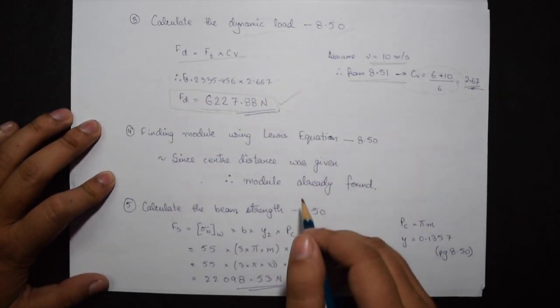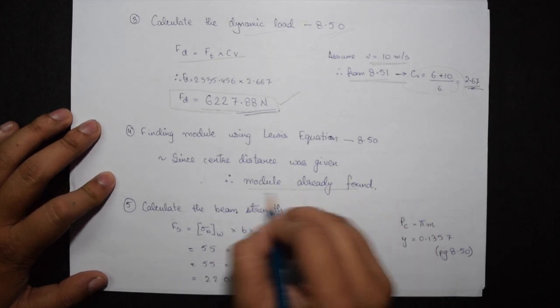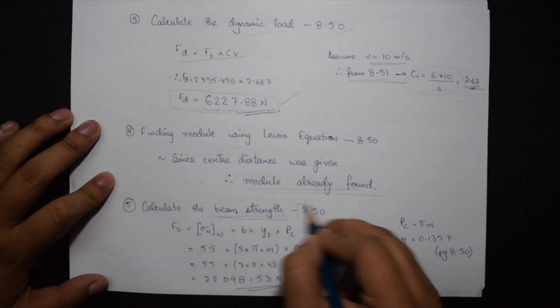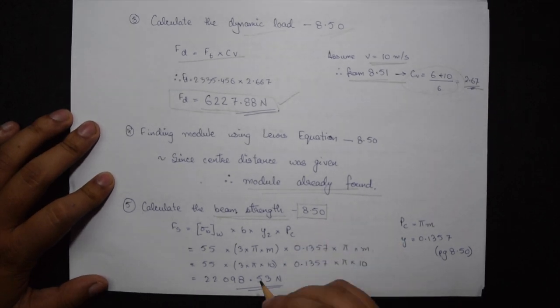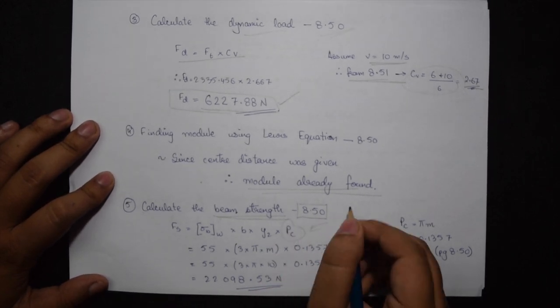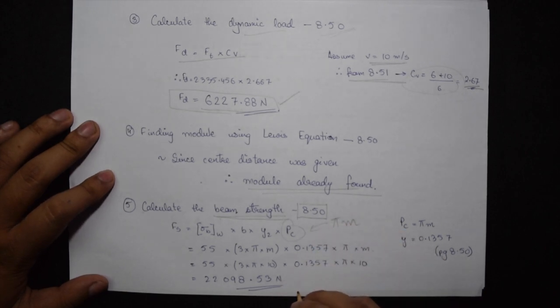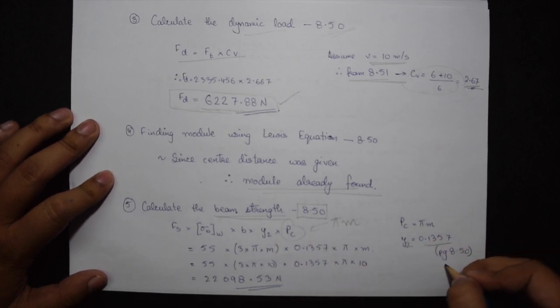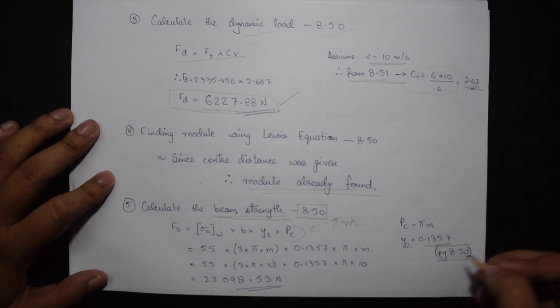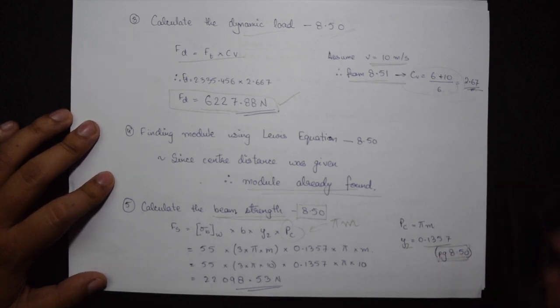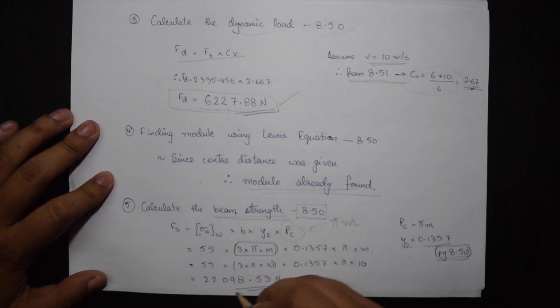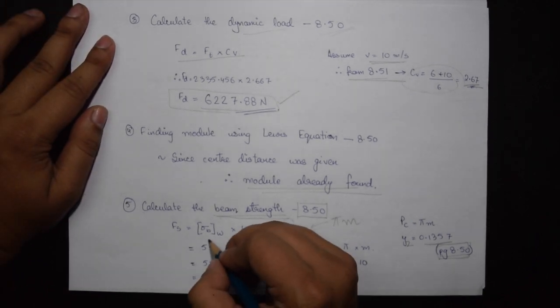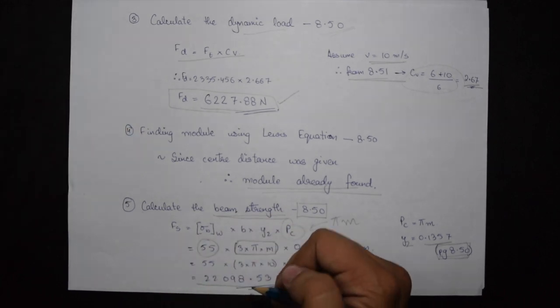As I told, the module was already found so we'll skip this step and directly jump to step 5 which says calculate the beam strength. Again this formula is given on 8.50. The values of PC would be pi into m as explained in the previous video of the same topic. Y2 would be 0.1357 from the formula on page 8.50 bottom right. B would be 3 into pi into m. So my value of FS comes out to be 22098.53 newtons. For explanation of this complete step, just refer to the earlier video of the same topic.